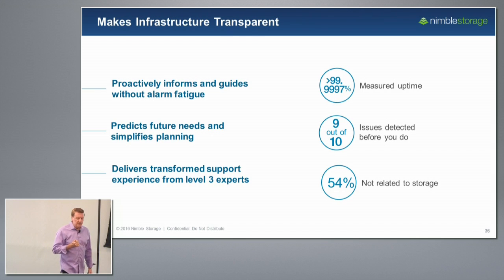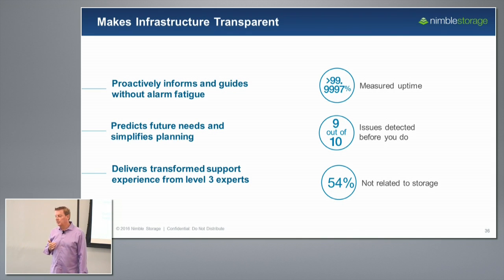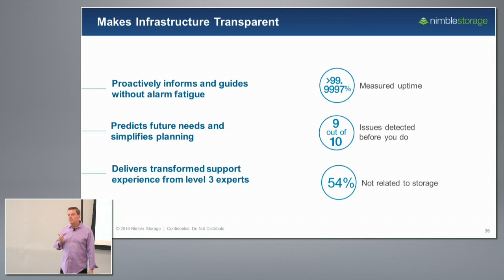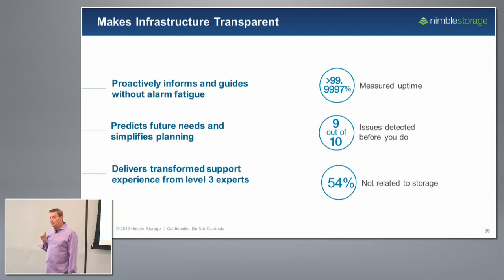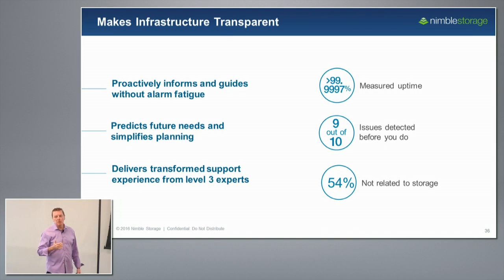Finally, this is what I always refer to as an unintended consequence of having InfoSight. Because we're doing all the predictive analytics and automated case creation and trying to avoid problems for our customers, we don't have any tiering in our support organization — level one and level two has been eliminated. When you call in to support, you're talking to a level three support engineer from start to finish, with no handoff to an escalations engineer. The net result is almost six nines availability across the entire install base, and nine out of ten issues are detected by us before the customer is aware of it.